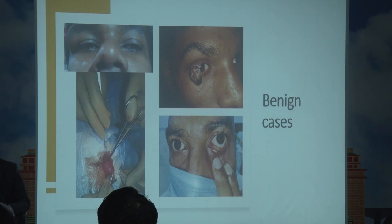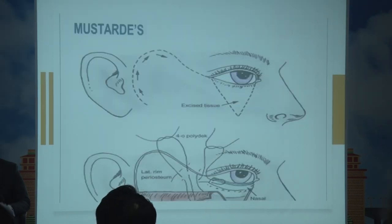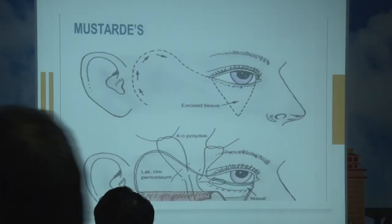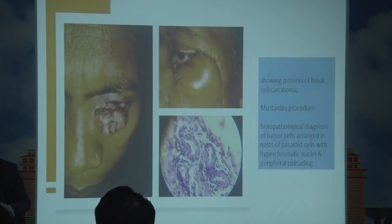These are pictures of certain benign cases showing a dermoid, a papilloma, and a conjunctival retention cyst. The schematic shows the semicircular Burow's flap, along with certain representative cases.